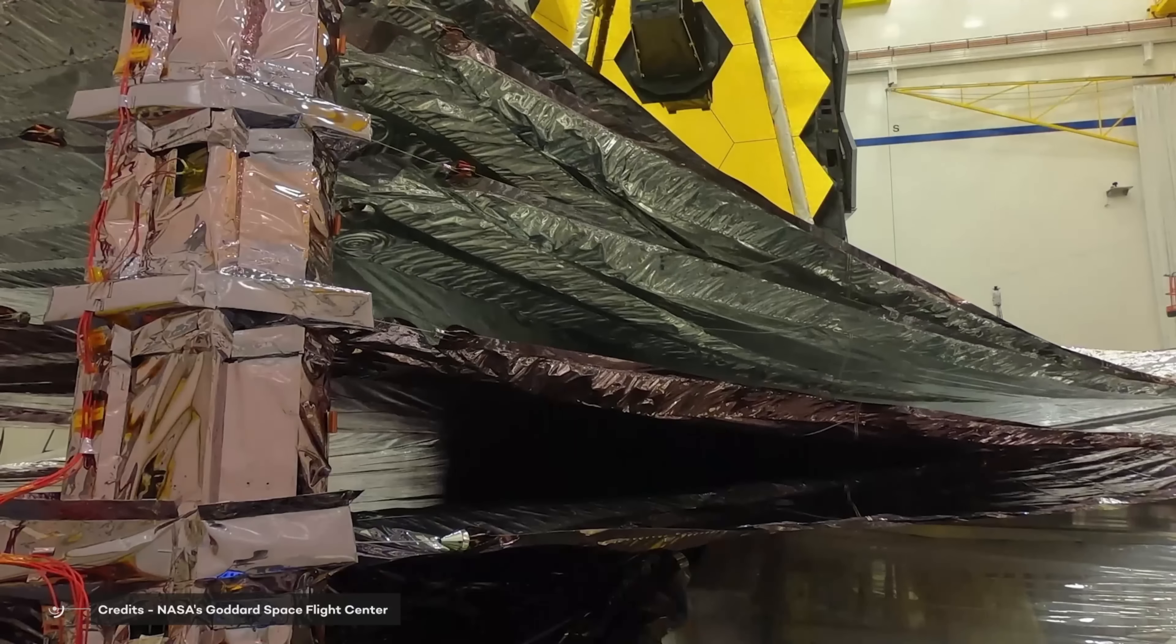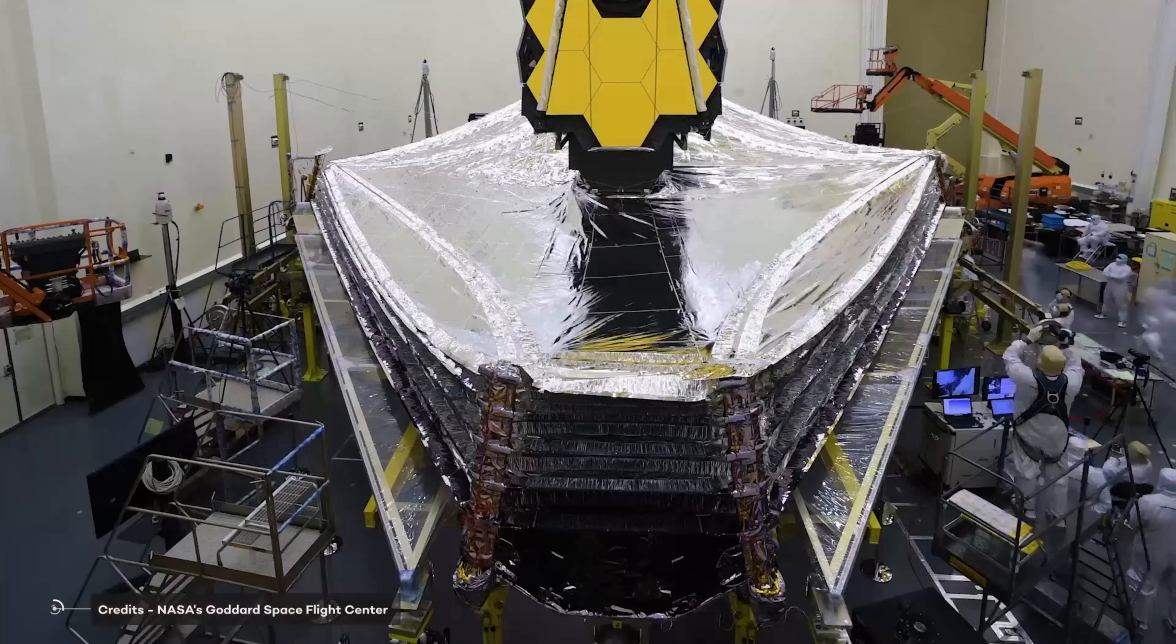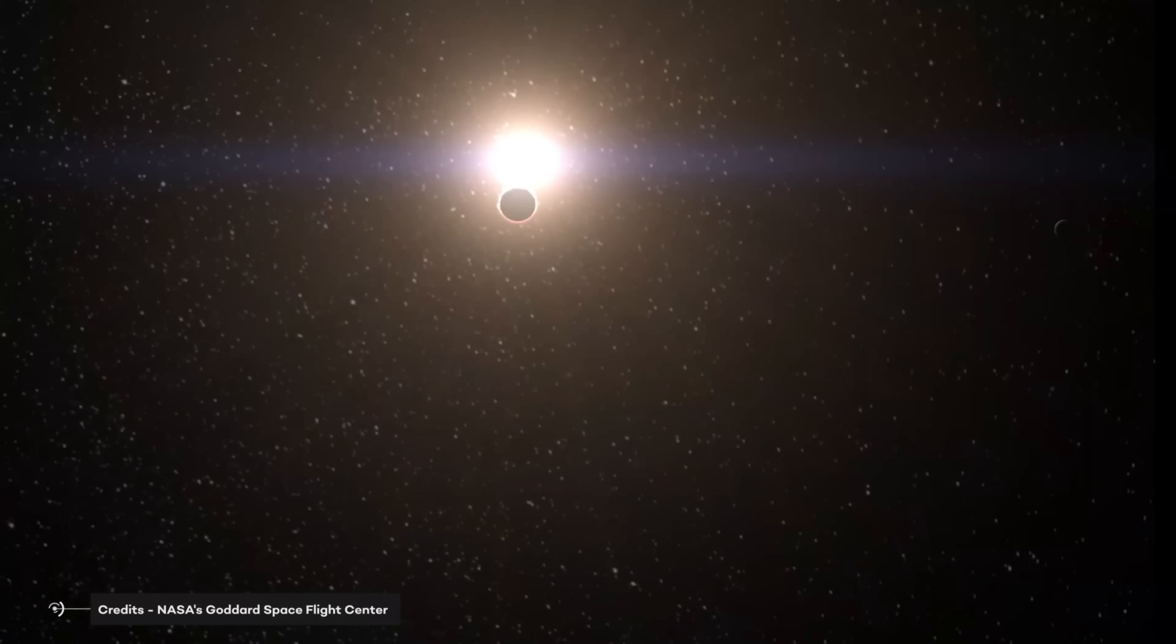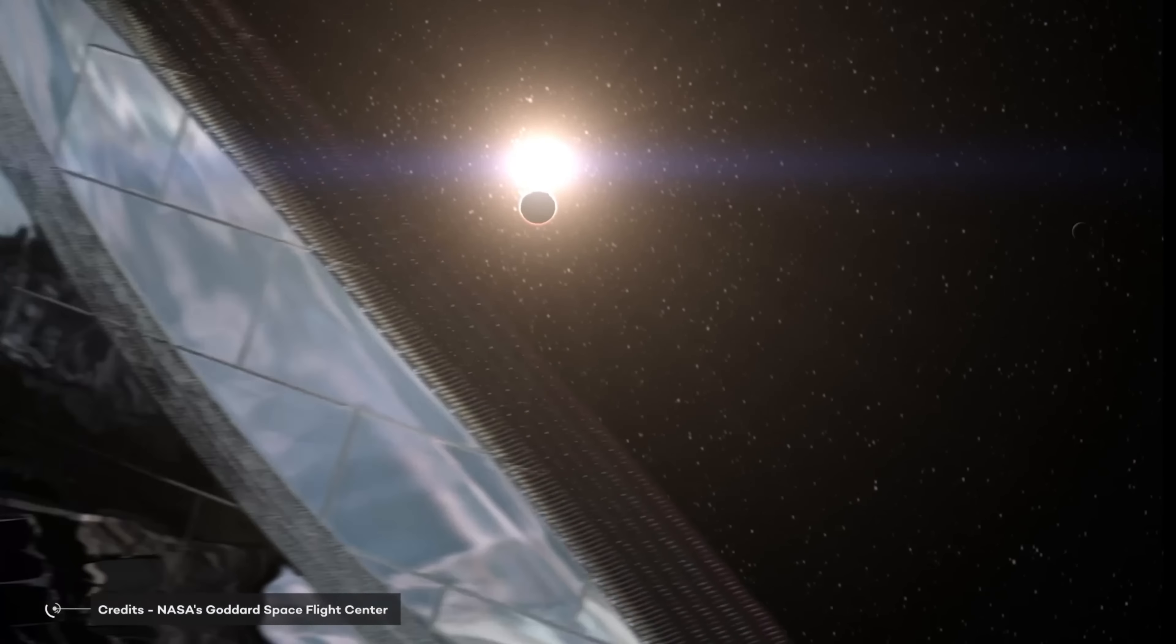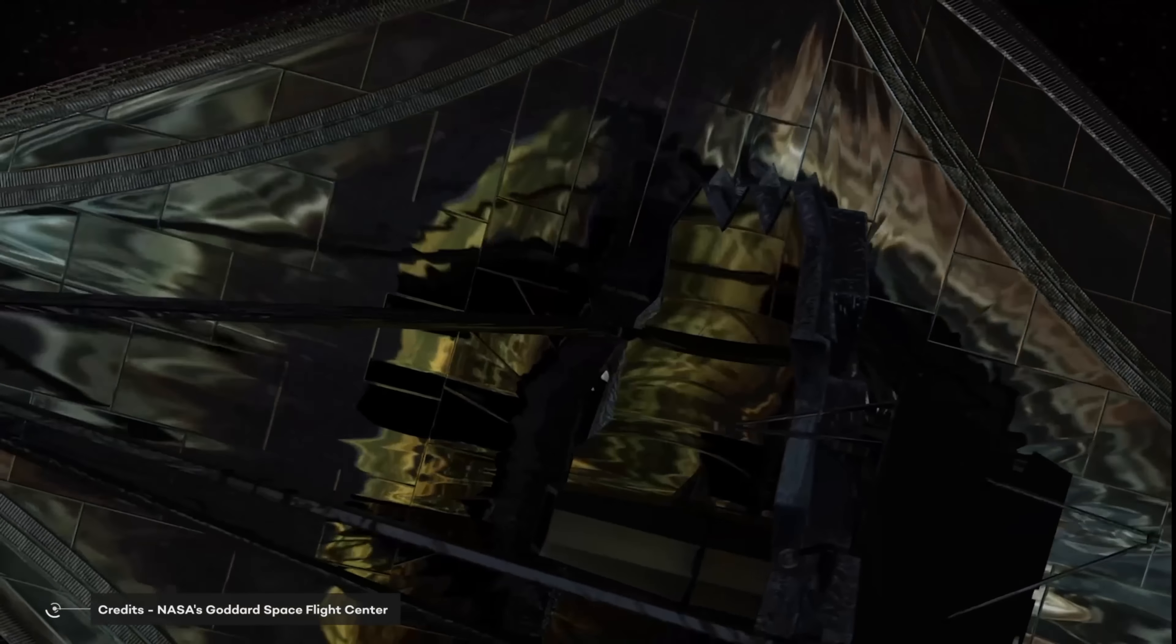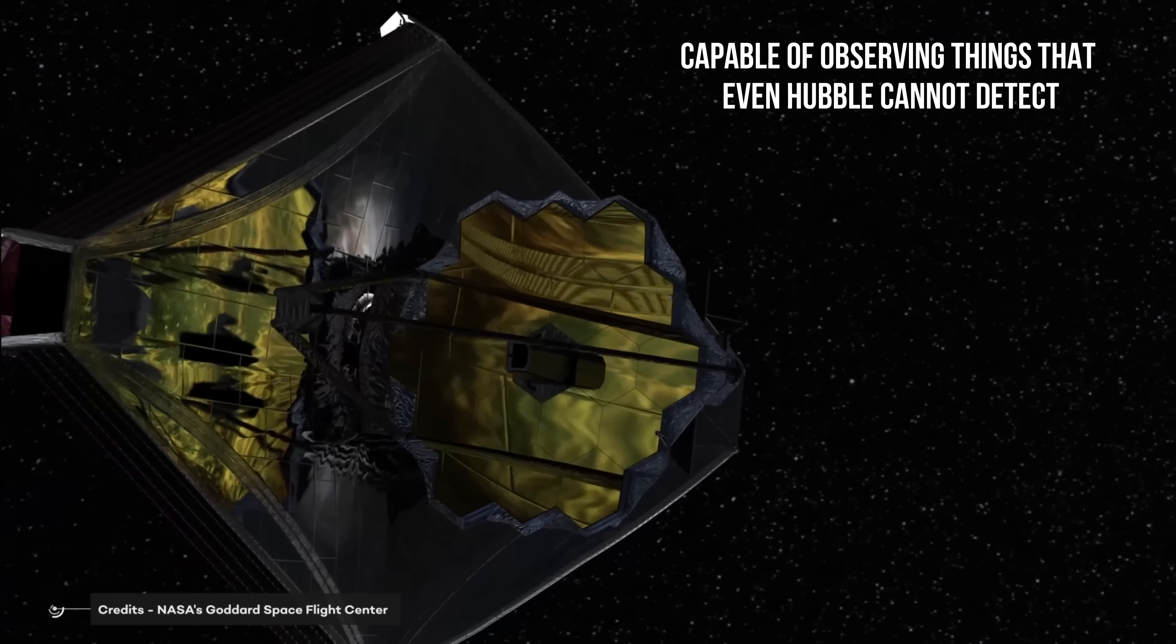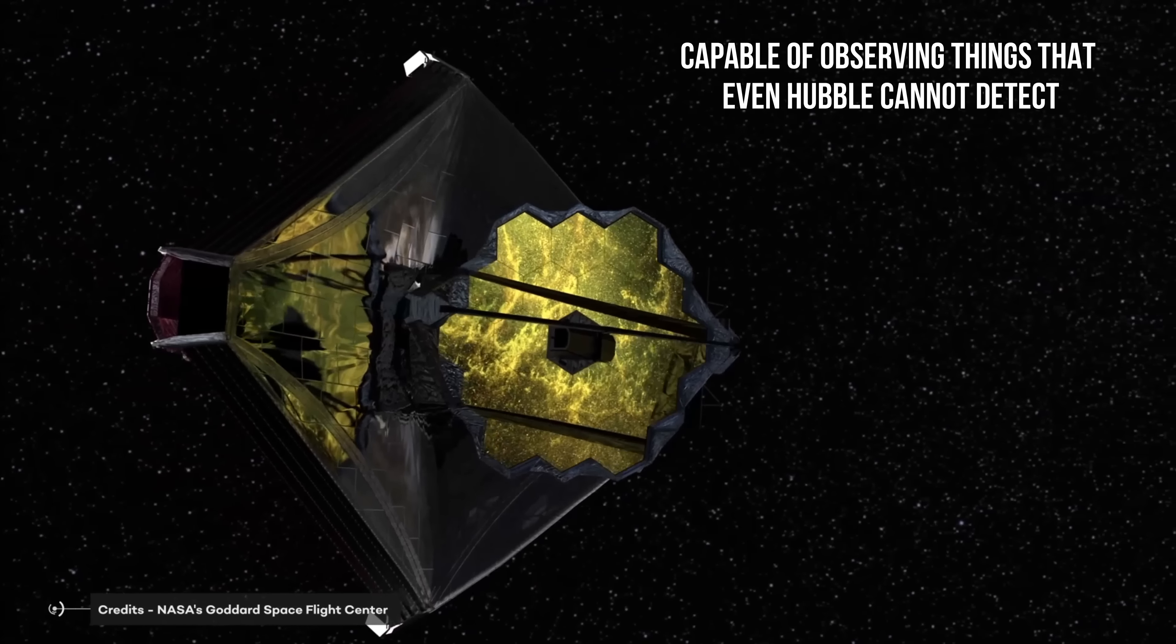The James Webb Space Telescope, when combined with bigger mirrors and greater sensitivity to infrared wavelengths, can see considerably further into space than any previous telescope. In fact, NASA has verified that it is capable of observing things that even Hubble cannot detect.